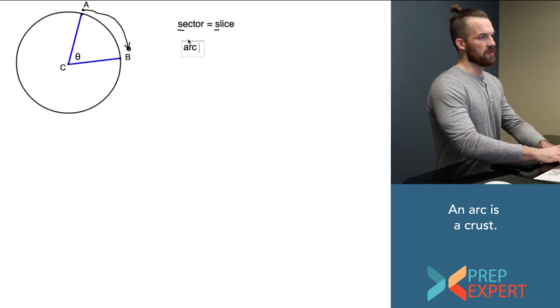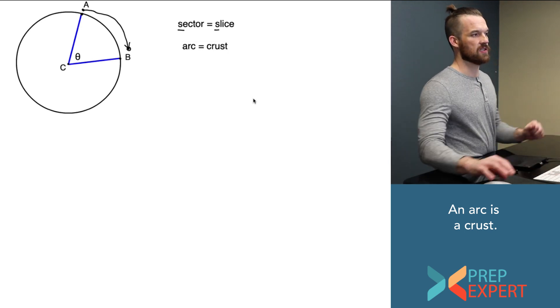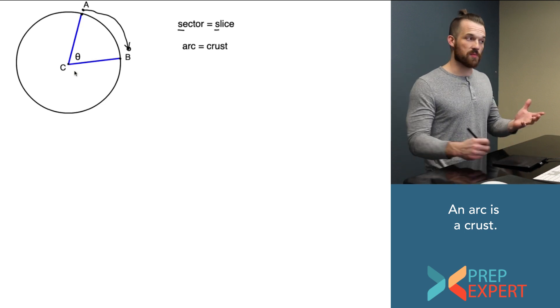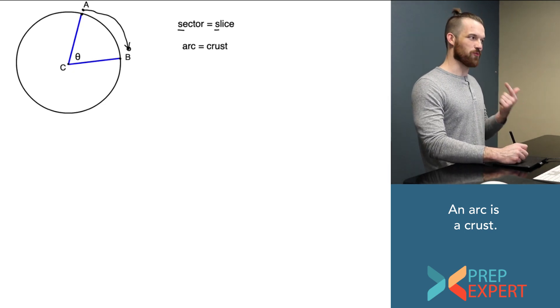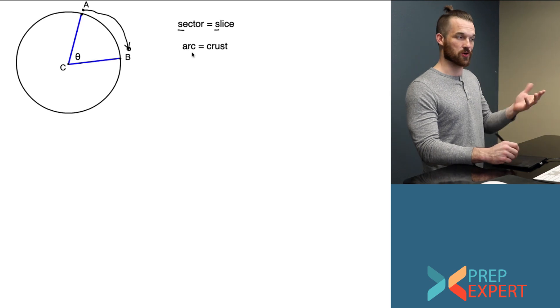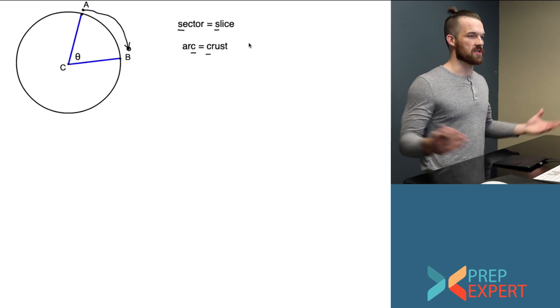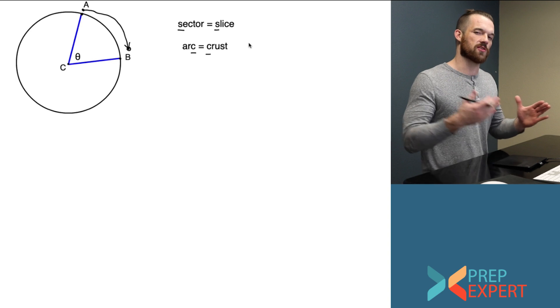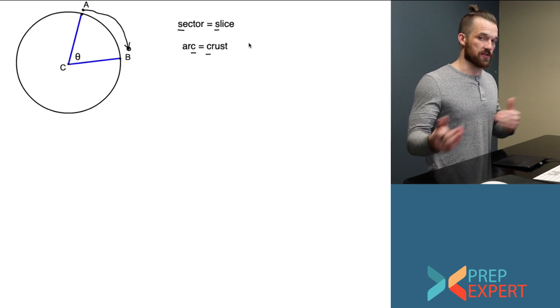And the easy way to remember that is this: if this circle were a pizza, what would that represent? It would be the crust of one slice, the distance around the edge of the circle from A to B. And so, arc has a C and so does crust. A sector is a slice and an arc is a crust.